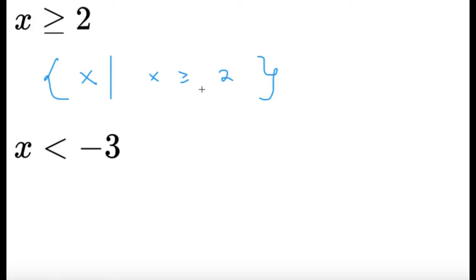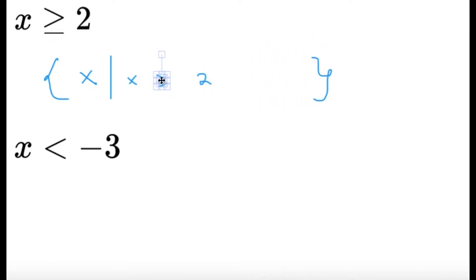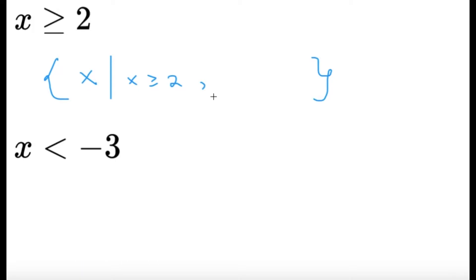We can always add more conditions. For example, to explicitly state that x is a real number, we write a comma followed by 'x ∈ ℝ'. The set builder notation is straightforward and a little easier to understand.